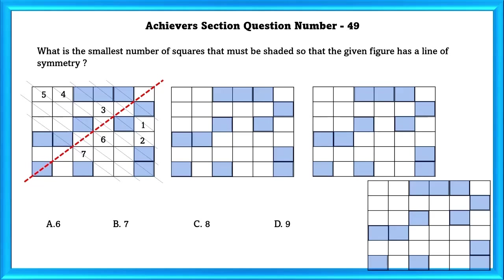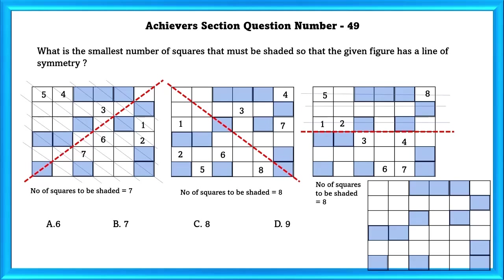If we shade seven squares then this figure will be symmetrical. Similarly the next figure, in order for this figure to be symmetrical we have to shade eight squares.